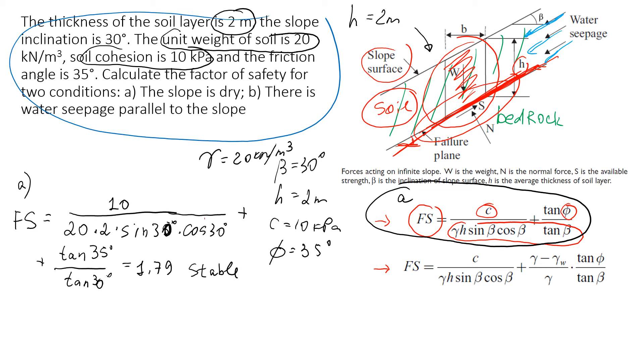Now let's look at the second case when we have seepage parallel to the slope. In this case, we use almost the same numbers except we also introduce this component, which is the difference between unit weight of soil and the unit weight of water.